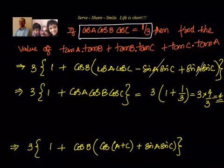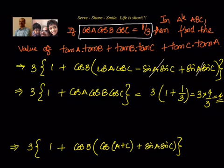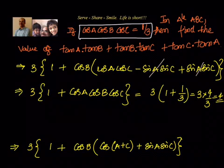We were able to get things in terms of cos A cos B cos C by using the fact that A plus B plus C equals 180 degrees. Actually, I should have written this as in triangle ABC — that is my mistake. Without specifying triangle ABC, the question is not correct, because only in a triangle do we know that A plus B plus C equals 180 degrees.